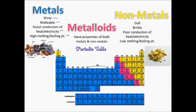Then you have the red section on the stair-step line — your metalloids. Metalloids have properties of both a metal and a non-metal. For instance, you can have a metalloid that is very dull but conducts electricity very well — silicon is used in computer chips because it can conduct information and electricity easily. Conversely, a metalloid might be very shiny but a very poor conductor of heat and electricity. They don't fit neatly on either side.